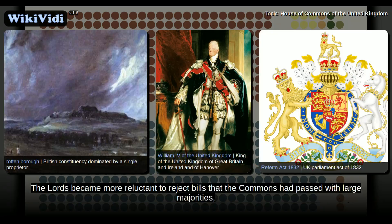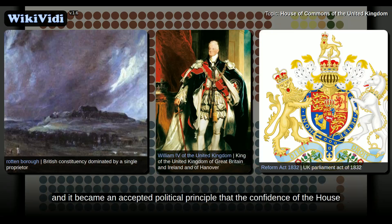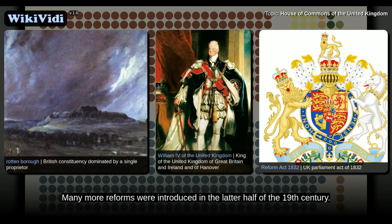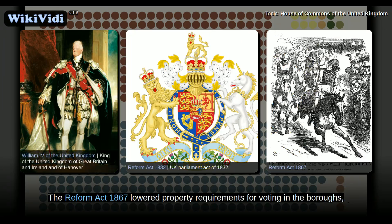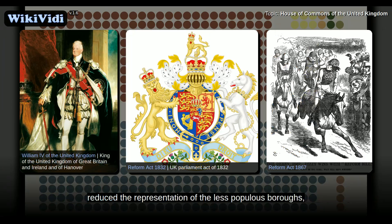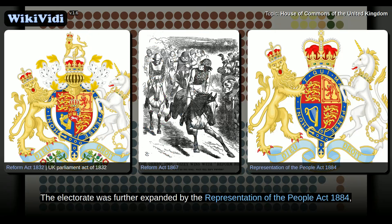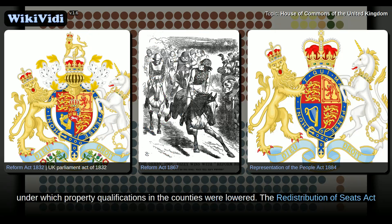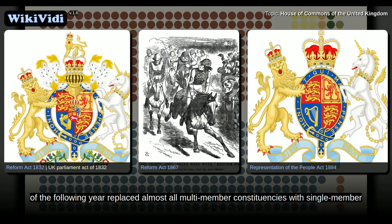The Lords became more reluctant to reject bills that the Commons had passed with large majorities, and it became an accepted political principle that the confidence of the House of Commons alone was necessary for a government to remain in office. Many more reforms were introduced in the latter half of the 19th century. The Reform Act 1867 lowered property requirements for voting in the boroughs, reduced the representation of the less populous boroughs, and granted parliamentary seats to several growing industrial towns. The electorate was further expanded by the Representation of the People Act 1884, under which property qualifications in the counties were lowered. The Redistribution of Seats Act of the following year replaced almost all multi-member constituencies with single-member constituencies.